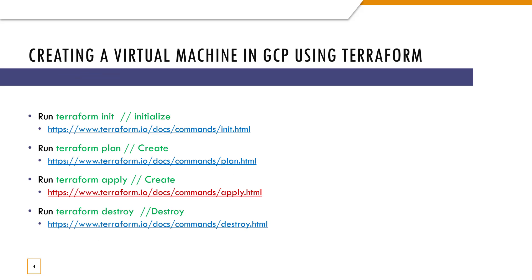After creating the file, we will run the init command, the plan command, the apply command, and the destroy command. Terraform init initializes the project. Terraform plan lets you verify whether the main.tf will execute as intended. Terraform apply executes the main.tf and creates the virtual machine instance. At the end, we run Terraform destroy to remove the virtual machine we've created.